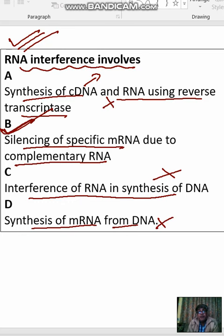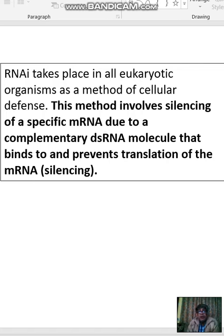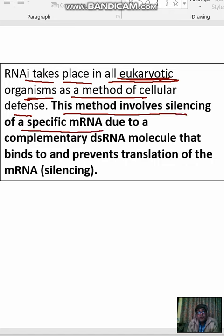Silencing of specific messenger RNA due to the presence of complementary RNA — RNA interference takes place in all eukaryotic cells. Organisms have a method of cellular defense. This method involves silencing of specific messenger RNA due to a complementary double-stranded RNA molecule that binds to and prevents translation of messenger RNA.